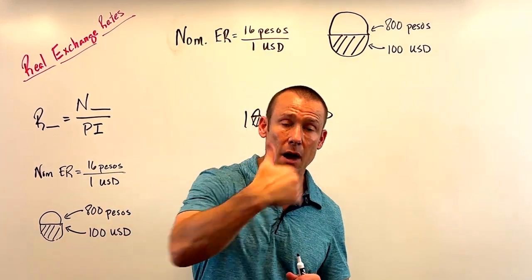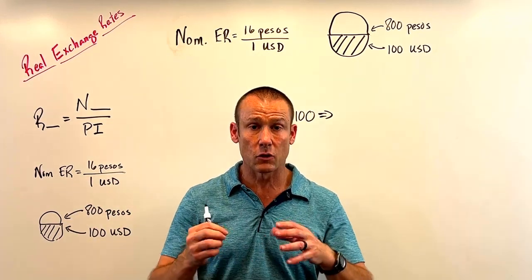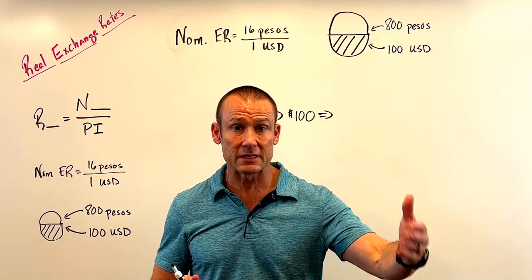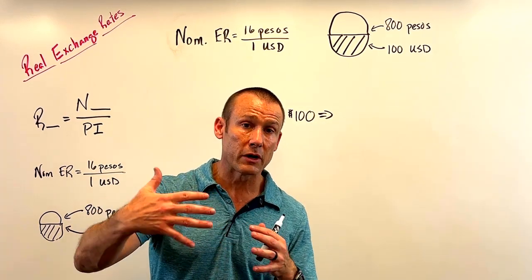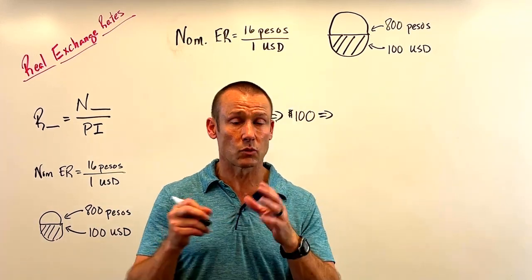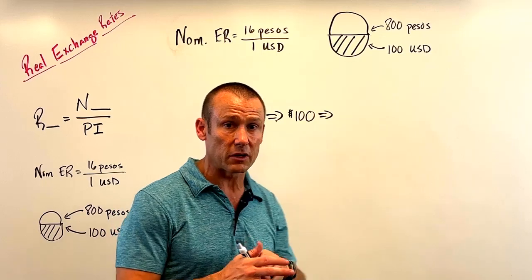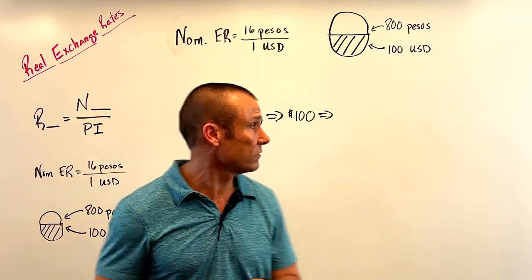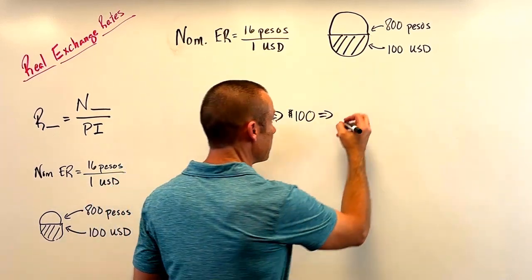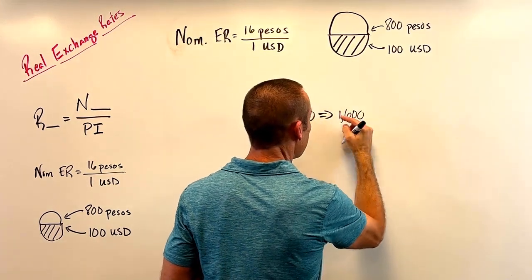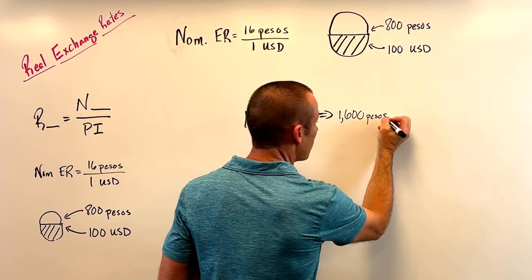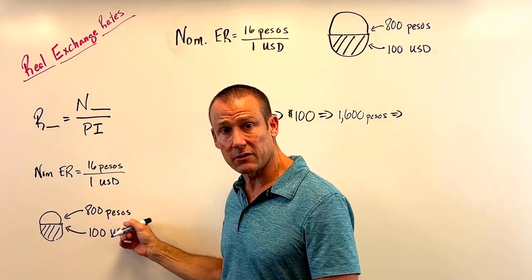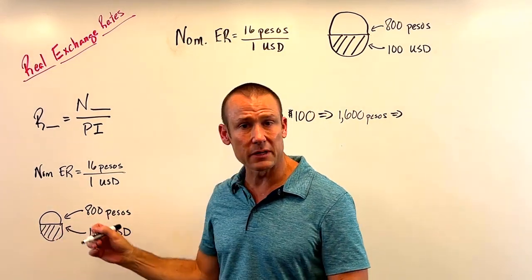Now I'm going to head to the exchange market. At the exchange market, currencies are being exchanged at the nominal rate — we live in a nominal world and speak to each other in nominal terms. The nominal exchange rate we're using is 16 pesos to one USD, so that $100 is going to get me 1,600 pesos.